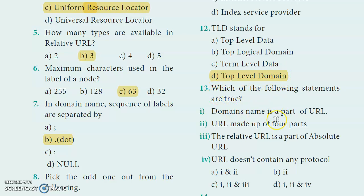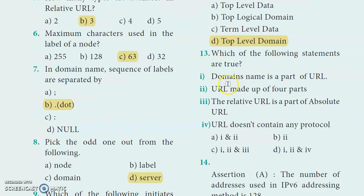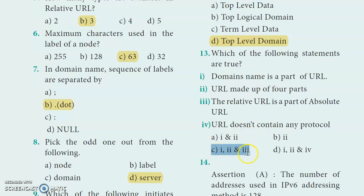Thirteenth question: Which of the following statements are true? First statement - domain name is part of URL. Second - URL is made up of four parts. Third - the relative URL is a part of absolute URL. Fourth - URL does not contain any protocol. The first three statements are true; the last statement is false. So the answer is option C - 1, 2, and 3.